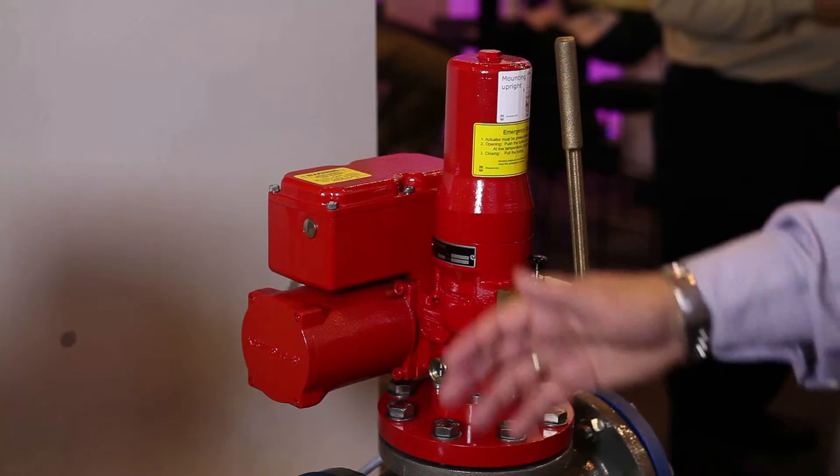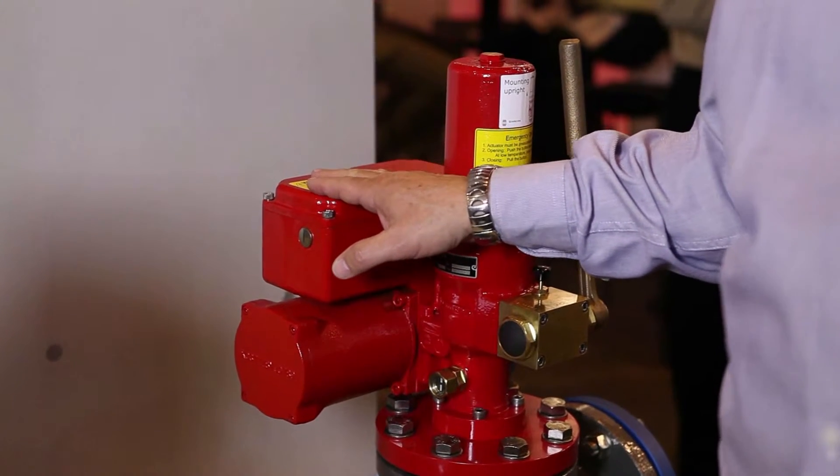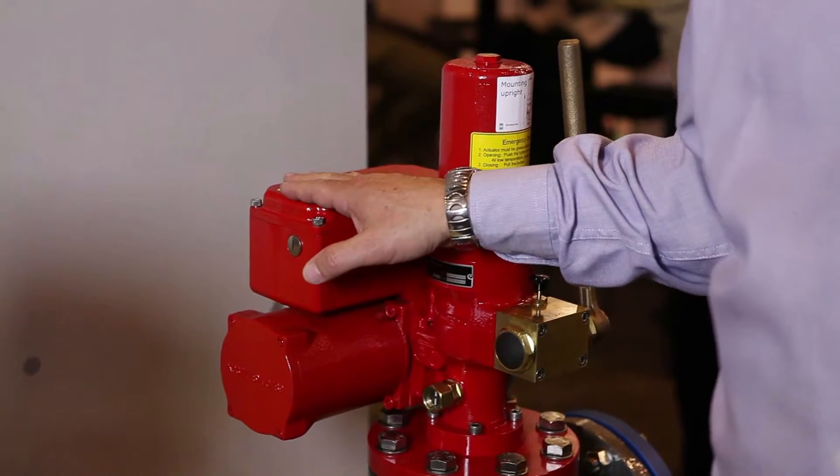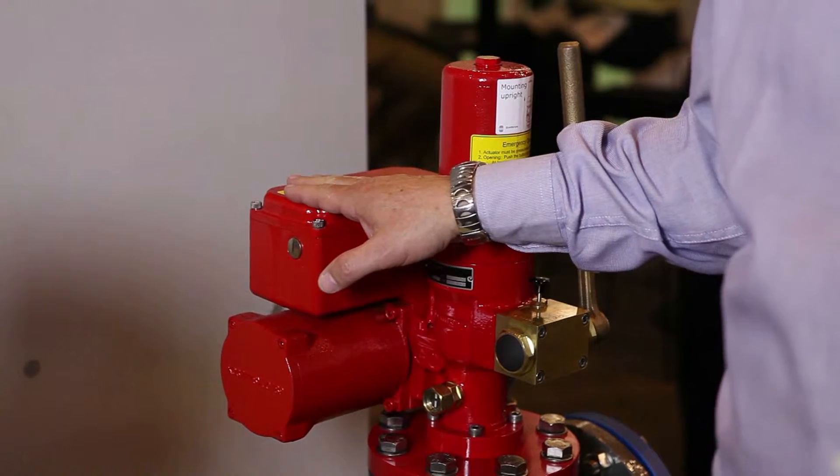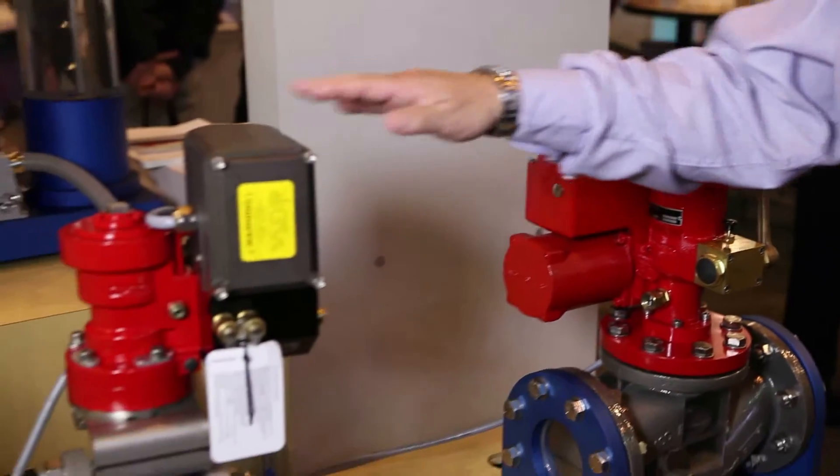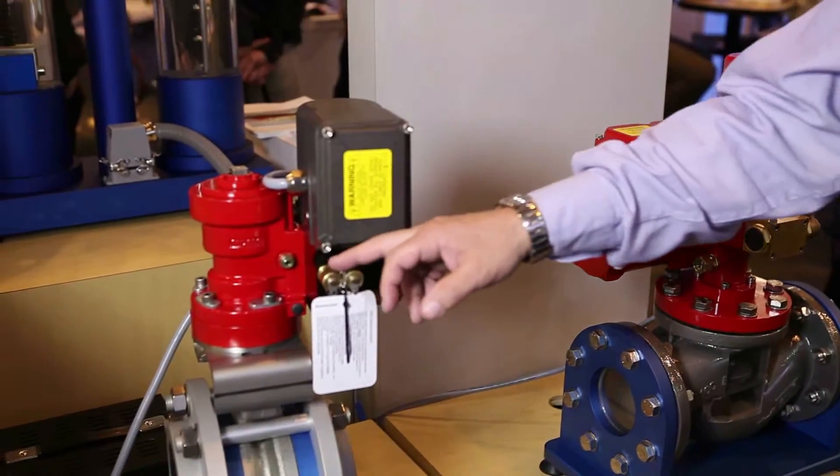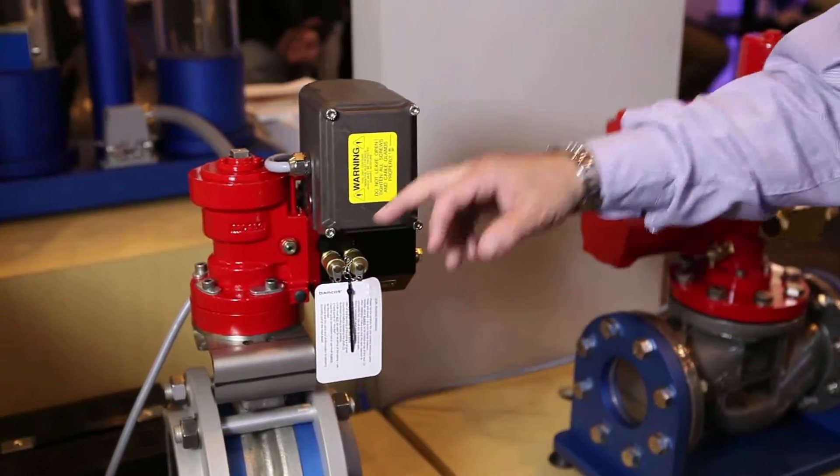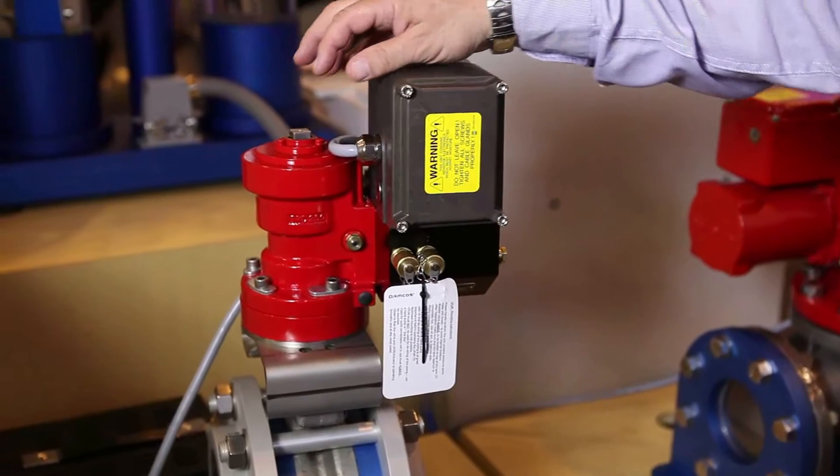The LPU is also available in an EXD execution so it can be applied in explosion hazardous atmospheres. The Mini LPU is like the LPU operable by means of two quick connections and it is again mounted directly to the actuator.